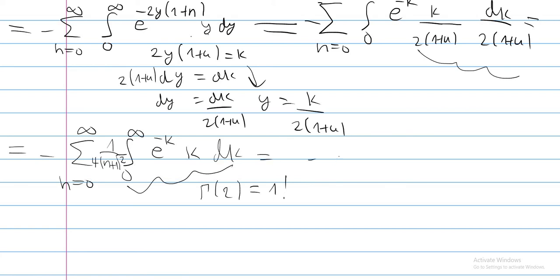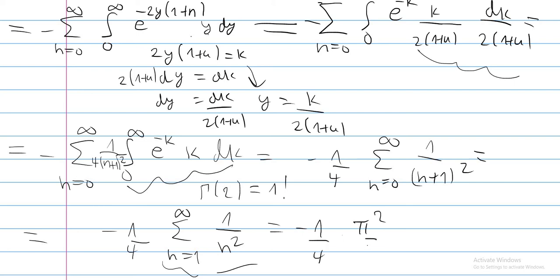So what we are left with, I will take minus 1/4 in the front, sum from n equals 0 to infinity, 1 over (n + 1) squared. And if we move indexes 1 in the front, we will get minus 1/4 times the sum going from 1 to infinity, 1 over n squared, and this is just the Basel problem. We all know this equals π²/6, and so this all together equals minus π²/24.